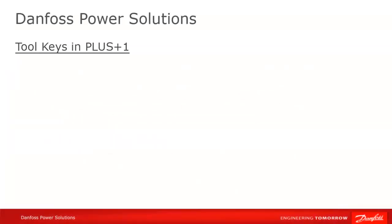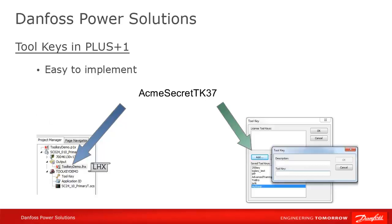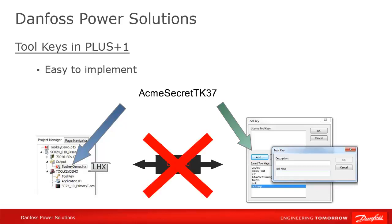Toolkeys are easy to implement. Essentially, you enter a toolkey — which is just an alphanumeric value of your own choosing — into your guide project, which is then added to the application at compile time. You will need to have the same toolkey in the service tool to access the application's diagnostic data. Without it, you will not be able to interact with the application, which prevents malicious tampering.